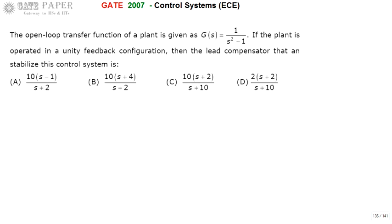Hello, we are discussing the GATE 2007 ECE paper. The open-loop transfer function of a plant is given as 1 by s squared minus 1. If the plant is operated in a unity feedback configuration, then the lead compensator that can stabilize this control system is to be determined.